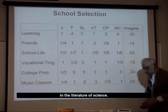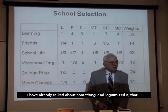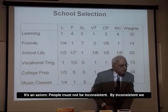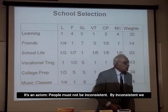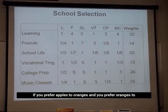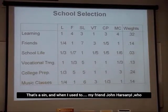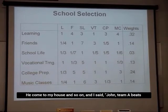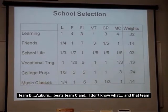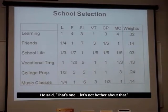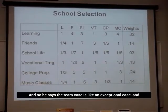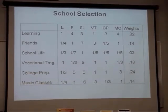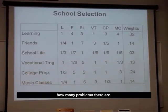In the scientific literature, I've legitimized something that used to be — and still is — objectionable: it's an axiom. People must not be inconsistent by being intransitive. If you prefer apples to oranges and oranges to bananas, you must never say you prefer bananas to apples. My friend John Harsanyi, who won the Nobel Prize in economics, and I discussed this. Team A beats team B, that team beats a third, and they beat team A — he said let's not bother about that, treating it as exceptional.